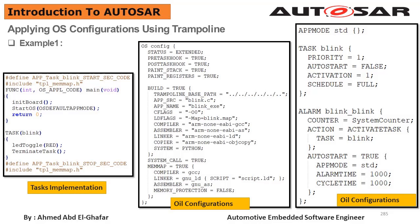After that, the activation attribute is equal to one. As we discussed before, a task can be activated once or multiple times, and the maximum number of activations is defined in the RTOS configuration with the attribute 'activation' of the task object.